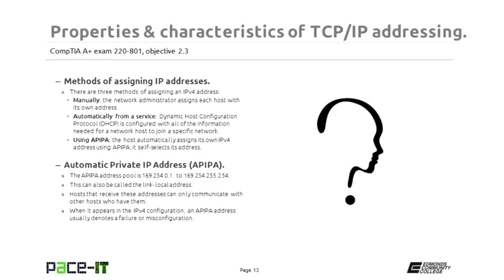Next, you could assign your IP address using a service like DHCP — Dynamic Host Configuration Protocol. This is the most common method of assigning IP addresses. Your IPv4 address is configured onto a device that acts as a DHCP server. When your devices come online, they send a request to the DHCP server and it provides all the information your hosts need — their IPv4 address, their subnet mask, the location of the default gateway, and more than likely information on where to locate a DNS server.